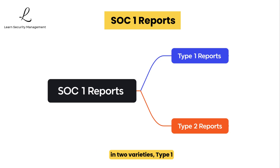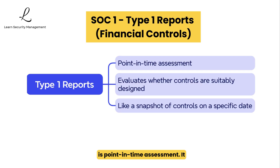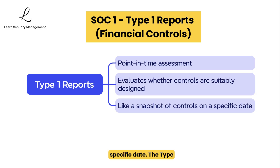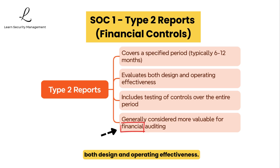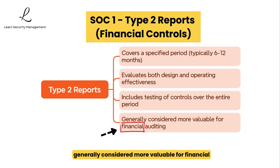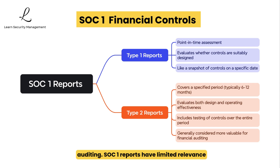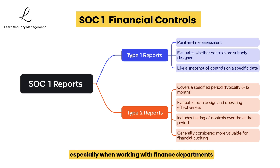SOC 1 reports come in two varieties: Type 1 and Type 2. Type 1 is a point-in-time assessment — it evaluates whether controls are suitably designed, like a snapshot on a specific date. Type 2 covers a specified period, typically 6 to 12 months, and evaluates both the design and operating effectiveness of controls, including testing throughout the entire period. Type 2 is generally considered more valuable for financial auditing. SOC 1 reports have limited relevance to cybersecurity specifically, but understanding them is still important when working with finance departments or auditors.